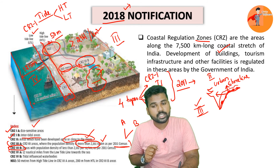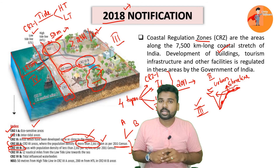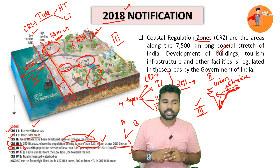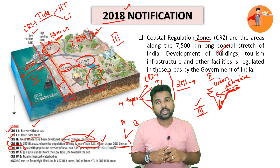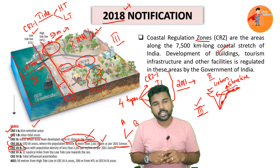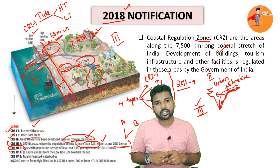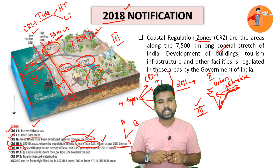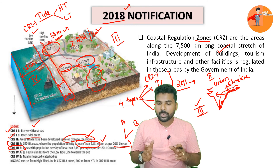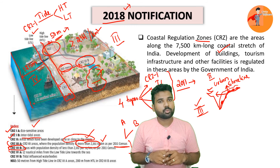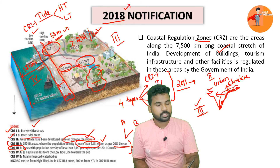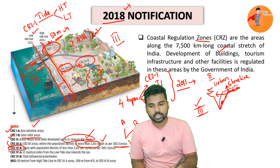This reduction in the no development zone to 50 metres is where the contention lies. Critics say it allows encroachment into coastal areas, and this is why the government has been criticised for the 2018 notification. Apart from this change, the rest of the provisions have been carried forward in a similar manner.